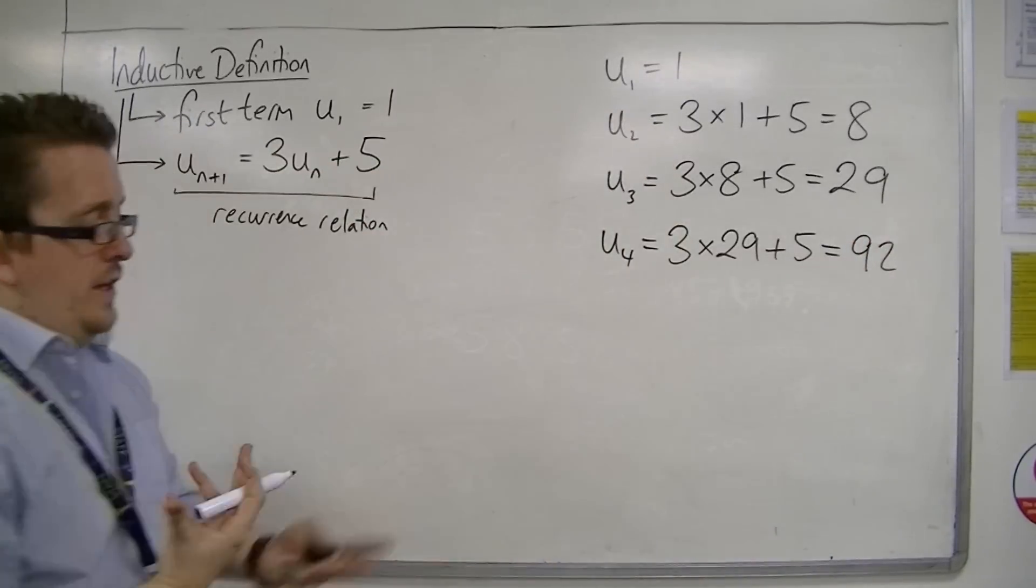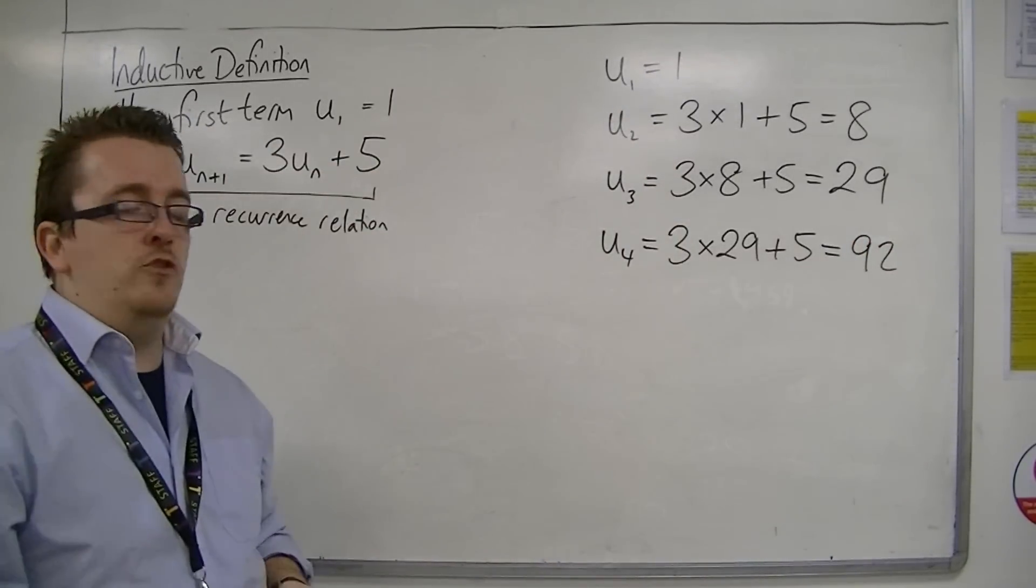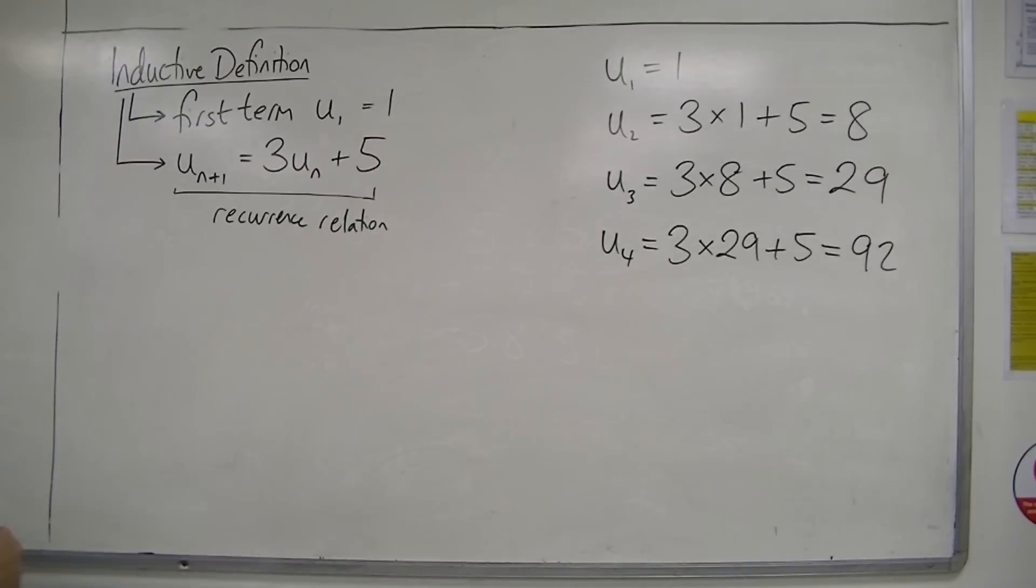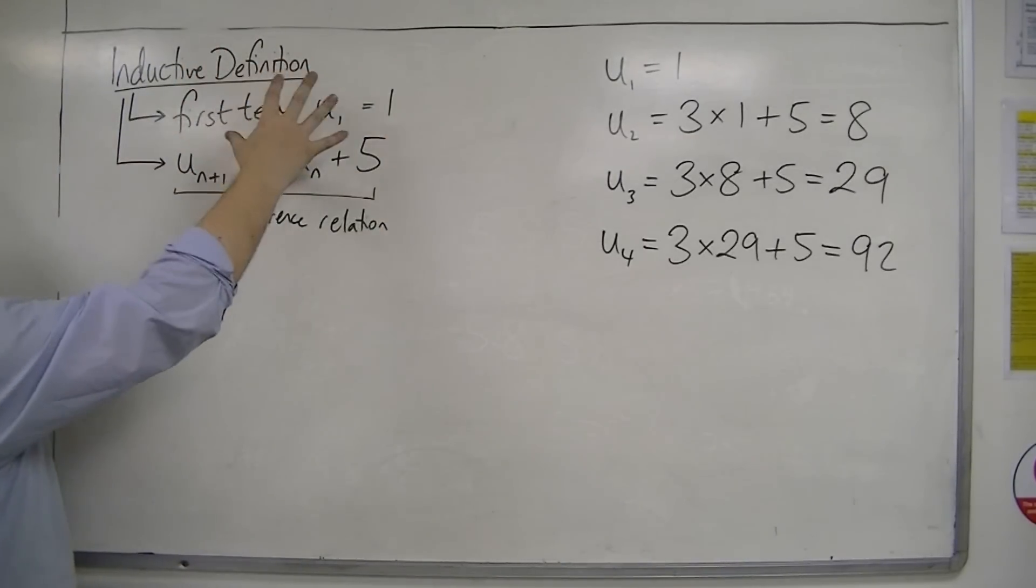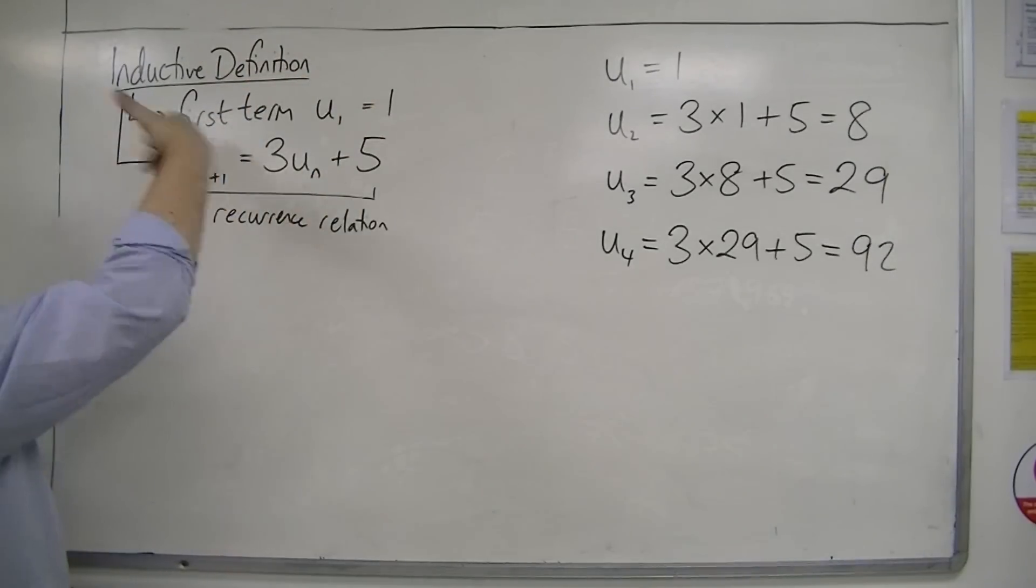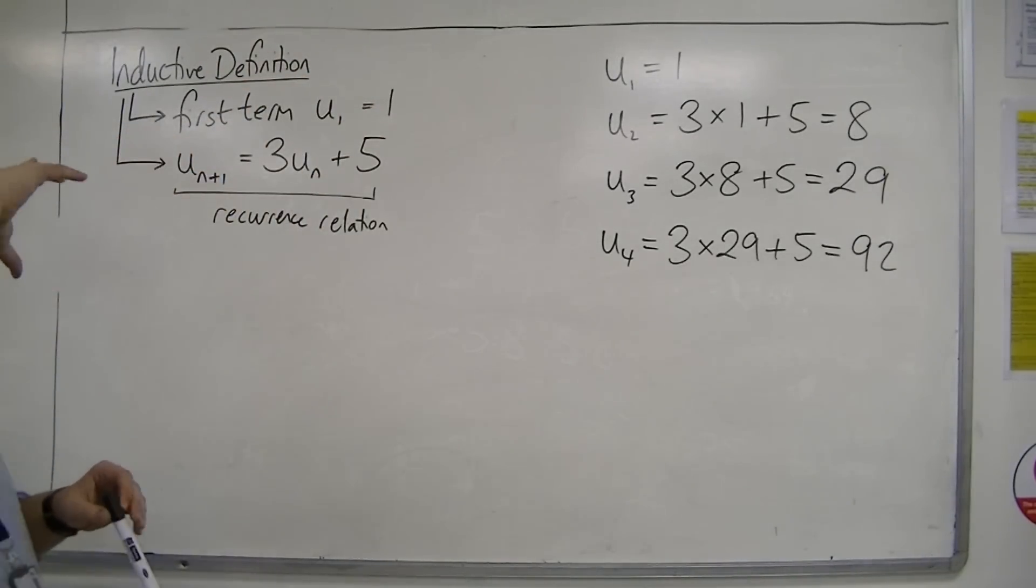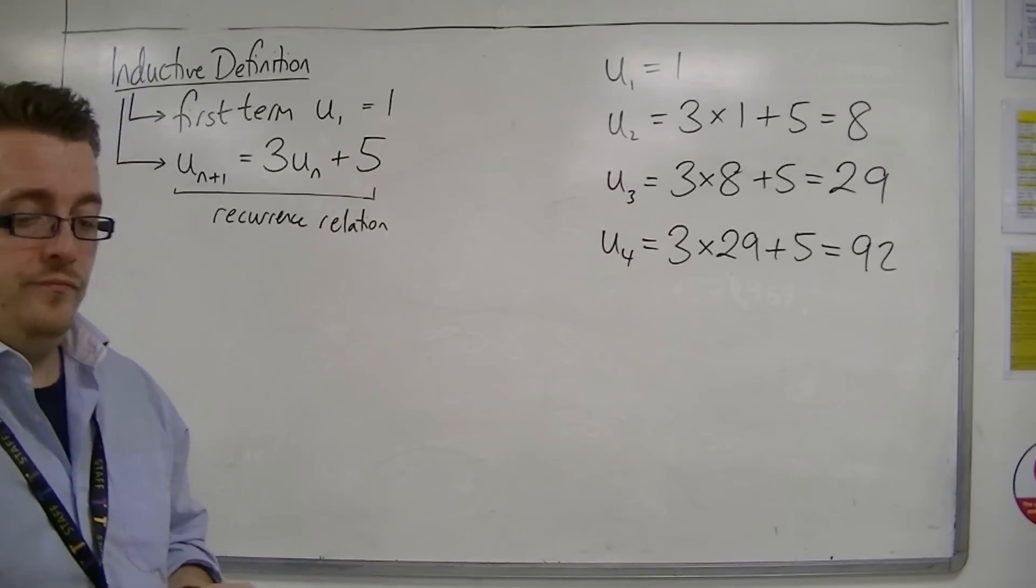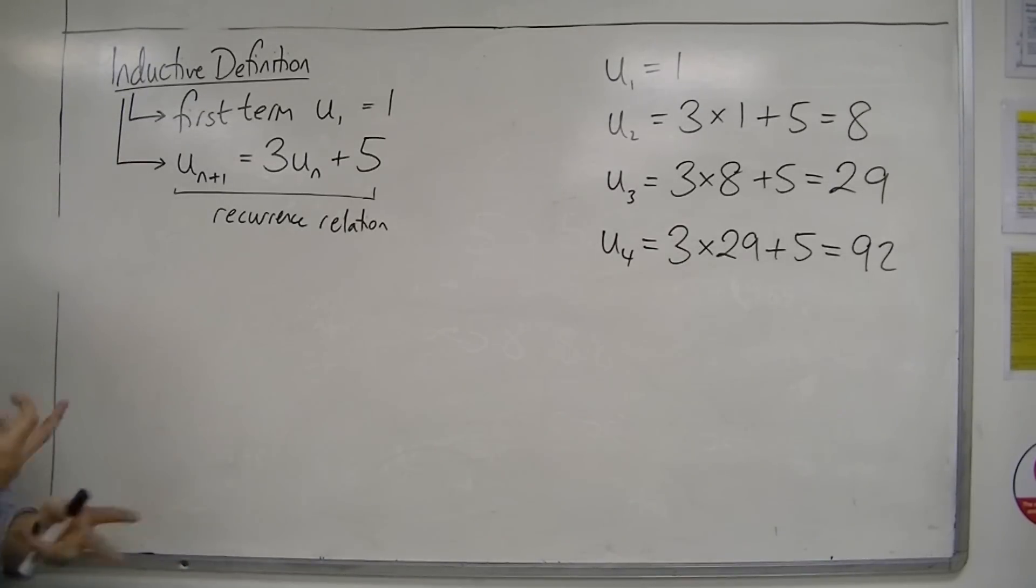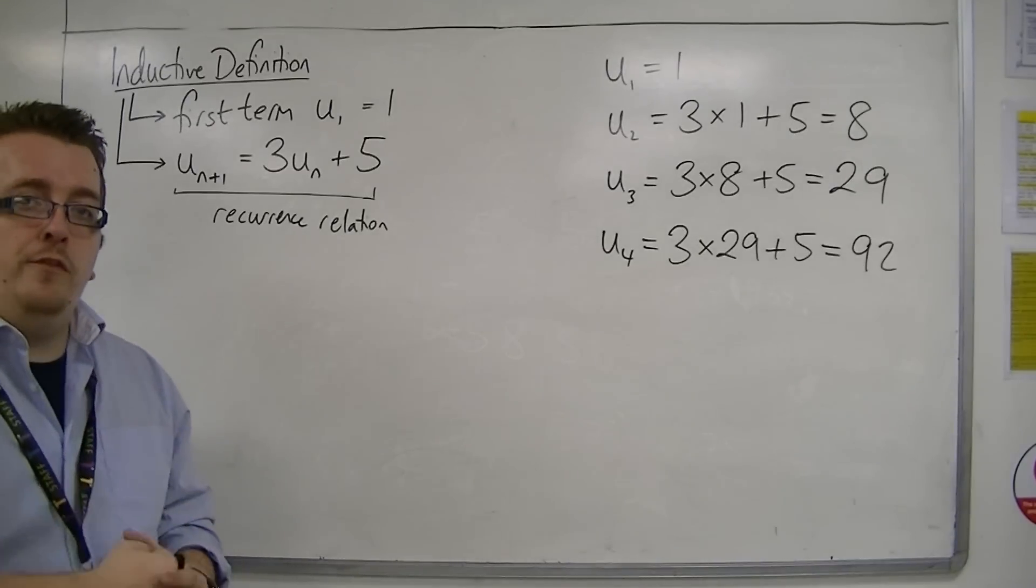And then I can work out U5, U6, U7, etc. So this is an inductive definition. It defines the first term and the recurrence relation, and it defines a sequence. And there are some things that we can do with this sequence which we'll be looking at in the next few videos.